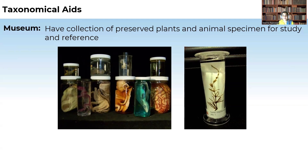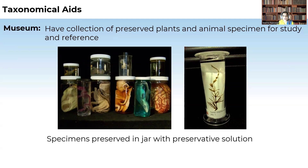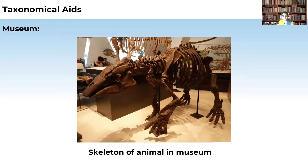How are specimens preserved in museums? They are preserved in a jar in a preservative solution — normally formaldehyde. A museum also contains preserved specimens such as skeletons of animals. For example, a museum may contain the skeleton of a dinosaur, allowing us to know that these animals existed previously and to understand their characteristics.